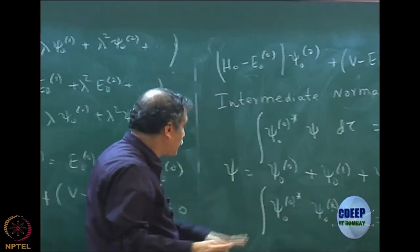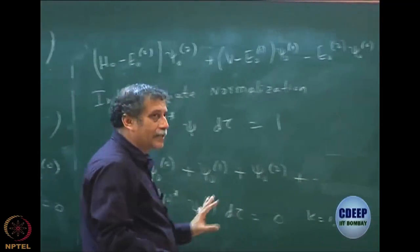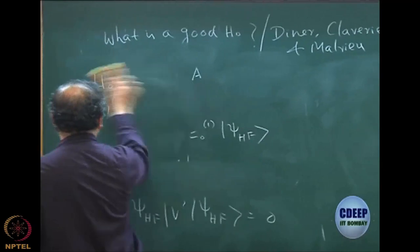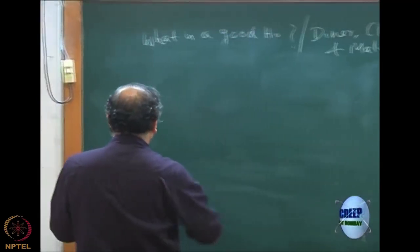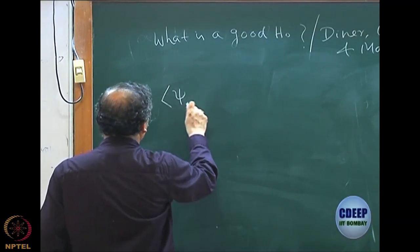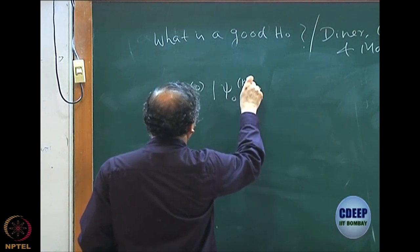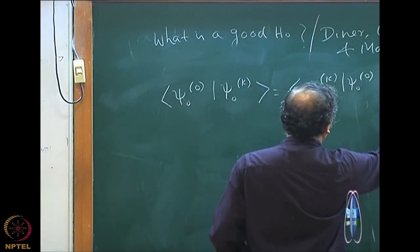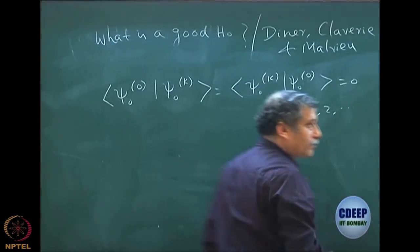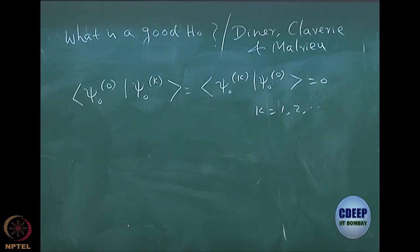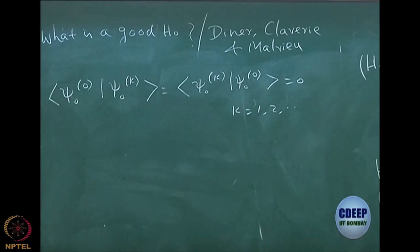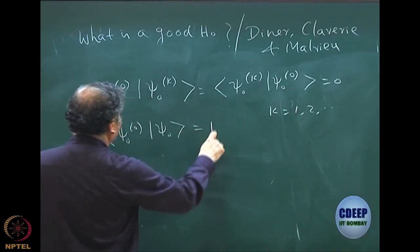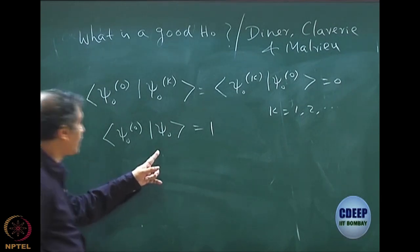Right now, let me derive the equation for E^(0,2) using this, and then we will stop today. In Dirac notation, intermediate normalization means psi^(0,0) | psi^(0,k) = psi^(0,k) | psi^(0,0) = 0 for k = 1, 2, 3. Please remember — only the correction terms satisfy this.